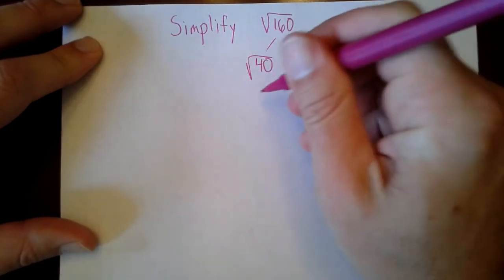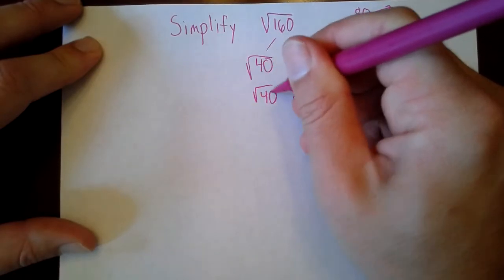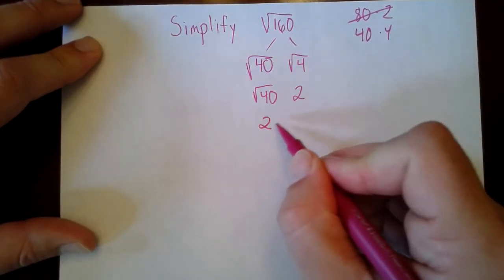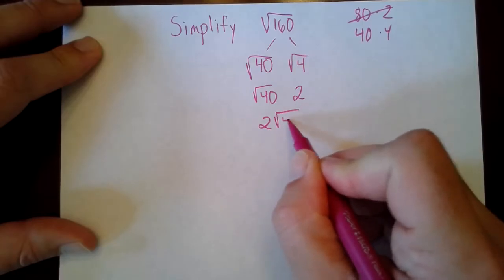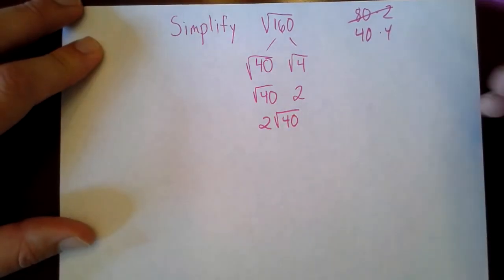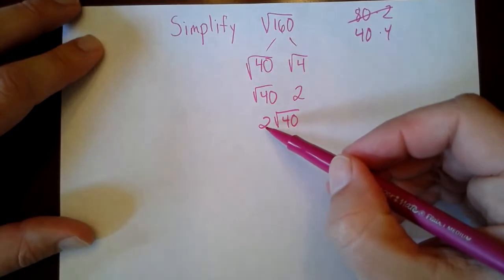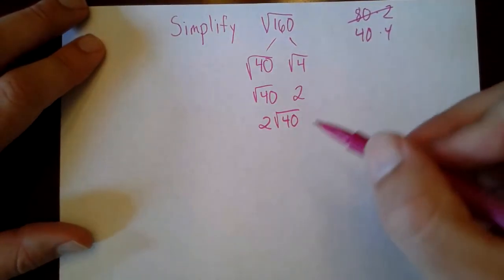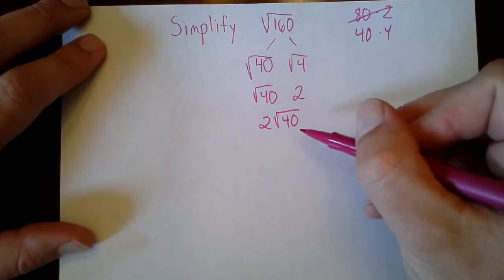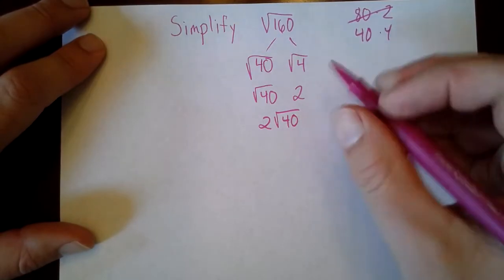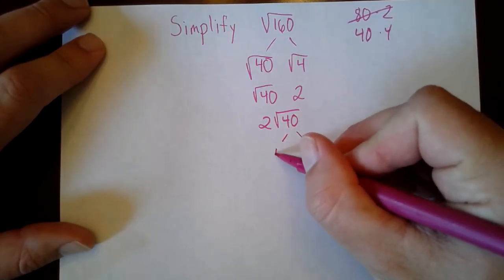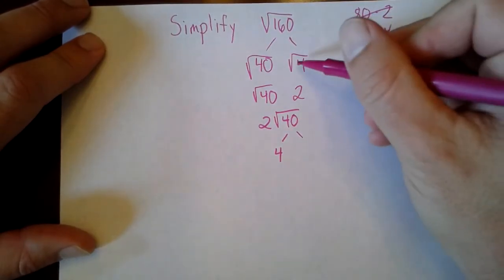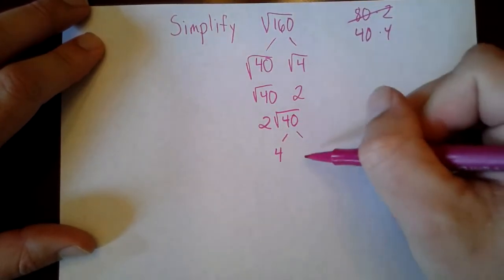Root 40 is just root 40, so I can write this as 2 root 40 — the coefficient is going to be the whole number. But now I have to look: can 40 be broken down into any perfect square factors? I know that 4 goes into 40, and 4 is a perfect square.